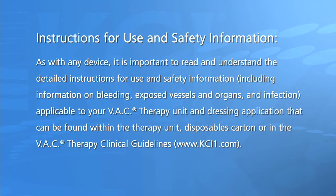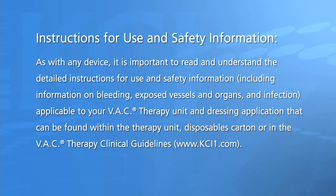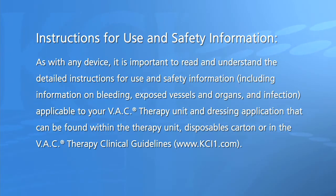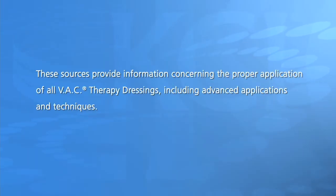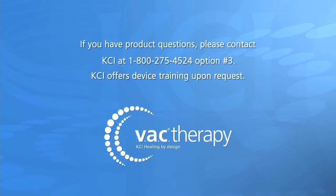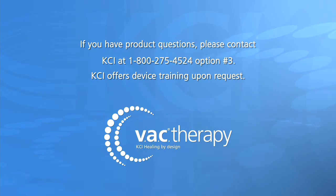Instructions for use and safety information: as with any device, it is important to read and understand the detailed instructions for use and safety information, including information on bleeding, exposed vessels and organs, and infection, applicable to your VAC therapy unit and dressing application. These can be found within the therapy unit, disposables carton, or in the VAC therapy clinical guidelines at www.kci1.com. These sources provide information concerning the proper application of all VAC therapy dressings, including advanced applications and techniques. If you have product questions, please contact KCI at 1-800-275-4524, option number 3. KCI offers device training upon request.